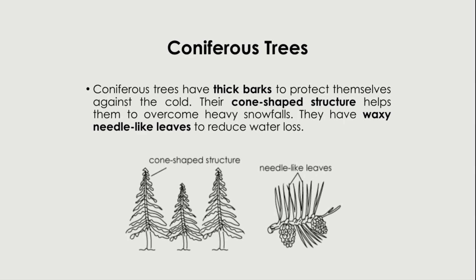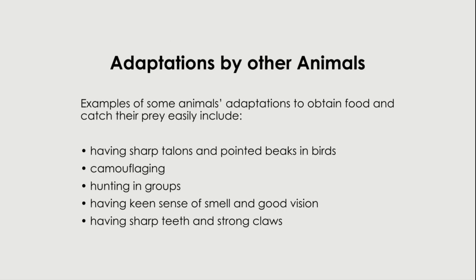What about coniferous trees? These trees have thick barks to protect themselves against the cold. Their cone-shaped structure helps them to overcome heavy snowfalls. And they have waxy, needle-like leaves to reduce water loss. So there are three adaptations: thick barks against cold, cone-shaped structure for heavy snowfalls, and waxy needle-like leaves to reduce water loss.